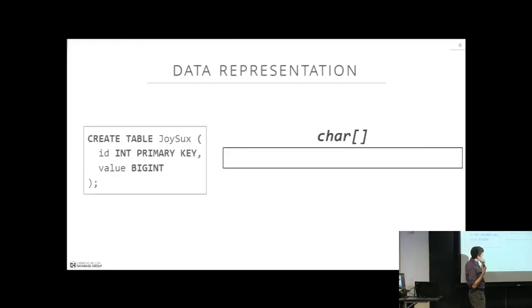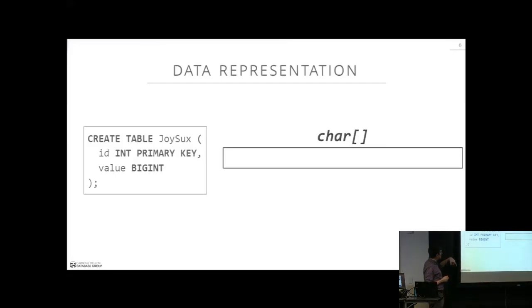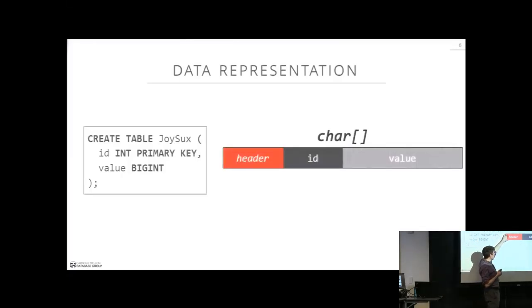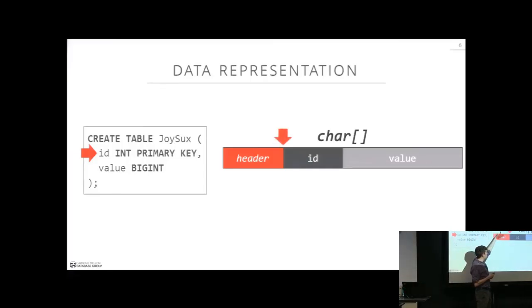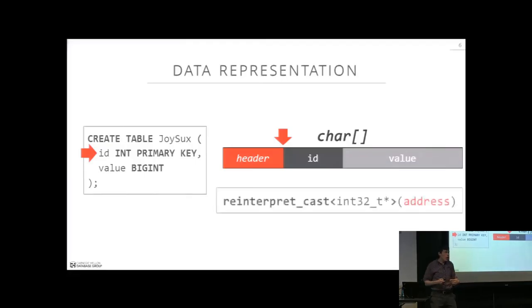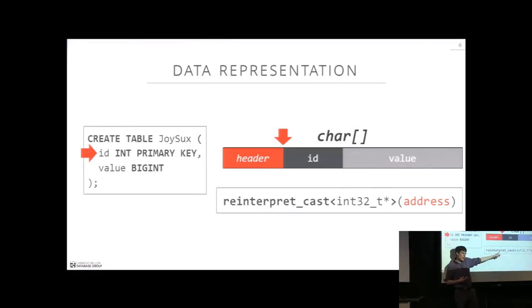Let's look at how we lay this out in memory. Say we have a table with two attributes: an int for the ID (32 bits) and a value which is a big int (64 bits). There's a 32-bit header at the start, then immediately the ID followed by the value. To access the first attribute, we know the tuple's starting point since it's fixed-length, jump 32 bits to reach the ID, and then use reinterpret_cast to take that address and cast it to whatever type pointer we want.